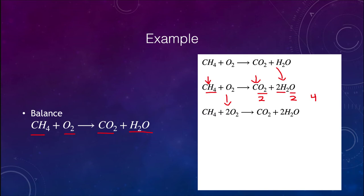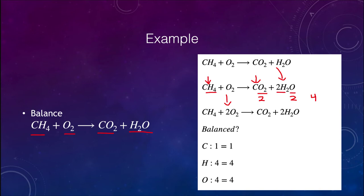Once we think we have things balanced, it's always a good idea to double check. Is this balanced? Carbon: we have one on each side — good. Hydrogen: we have four on each side — balanced. And oxygen: we have four on each side. So when everything balances, yes, we have a balanced equation.